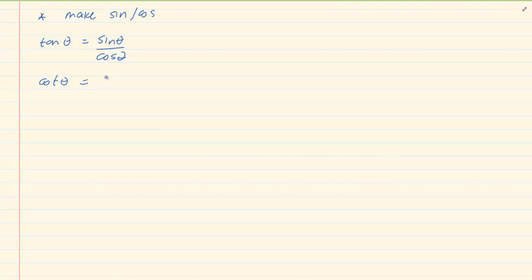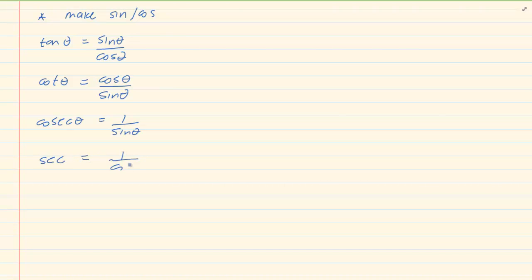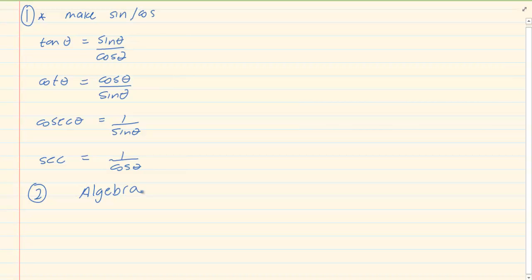When doing identities, the main rule is to make everything sin and cos. We know that tan theta is sin over cos, cot theta is cos over sin, cosec theta is equal to 1 over sin theta, and sec theta is equal to 1 over cos theta. So every ratio can always change back to sin and cos. Once you do that, we are doing algebra — common factors, factorizing, getting common denominators. And we work around the identity where sin squared theta plus cos squared theta is equal to 1.